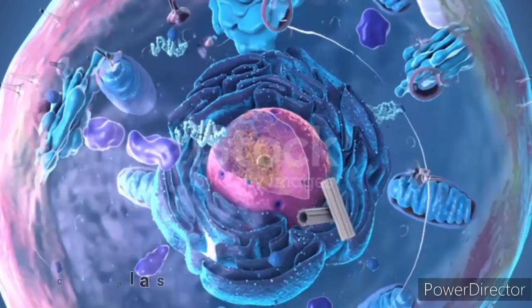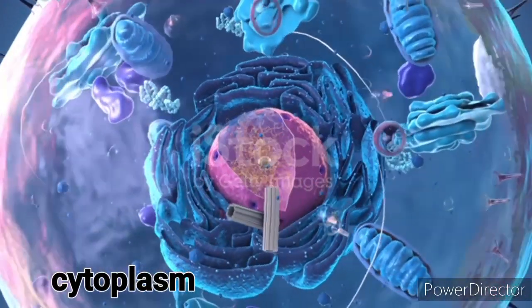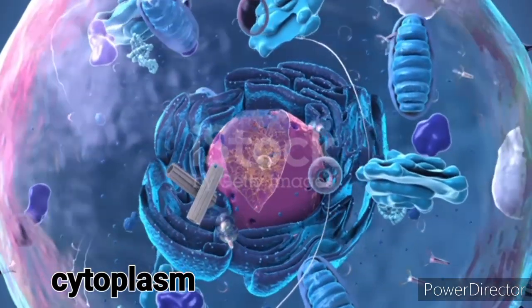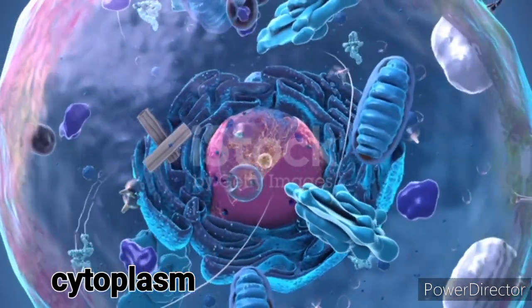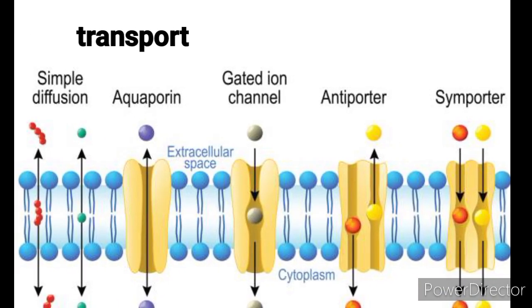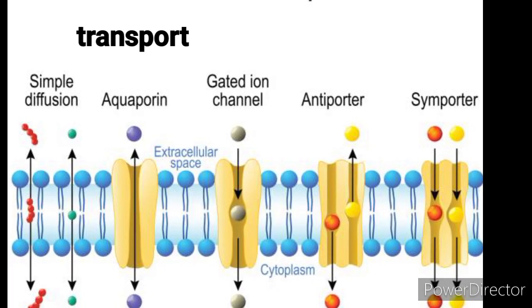Importance in homeostasis. Cytoplasm maintains cellular homeostasis by regulating the concentrations of ions and molecules inside the cell, ensuring an optimal environment for cellular activities.